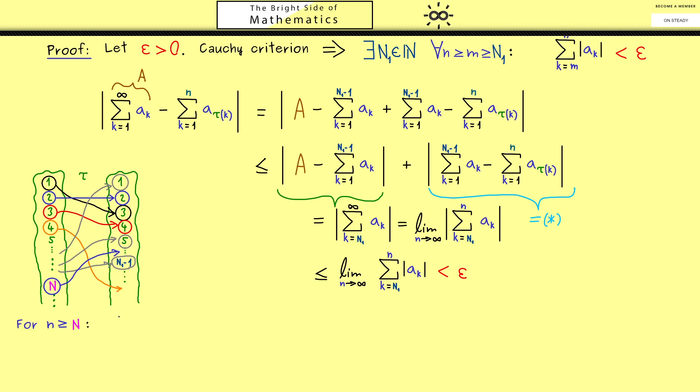For all indices N greater or equal than this capital N, we can consider the set of images: tau 1, tau 2 until tau n. This is always a superset of the set given by indices 1, 2 until N1-1. We hit at least all these indices on the right. For our part star, this means we completely eliminate this sum. Only terms in this sum remain.